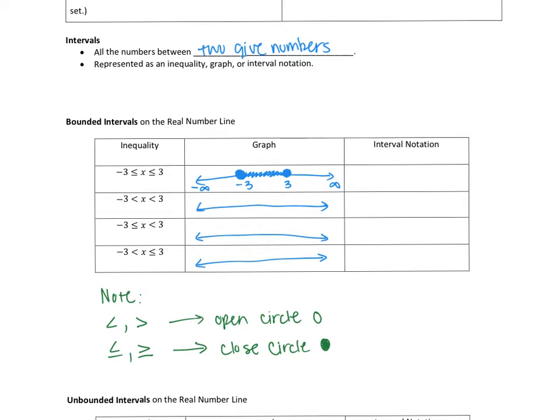When we're looking at interval notation, it uses parentheses and brackets. How do you know which one to use is based on your inequality symbol or your circles. If you have an open circle, you always use a parenthesis. If you have a closed circle, you use a bracket, because it's touching that number — it equals that number.